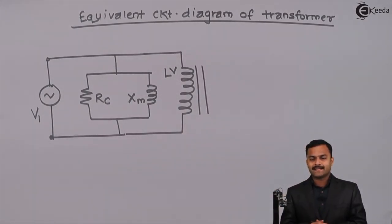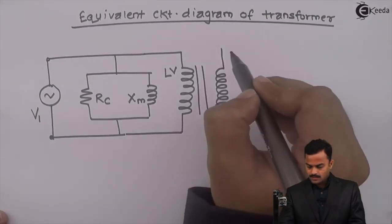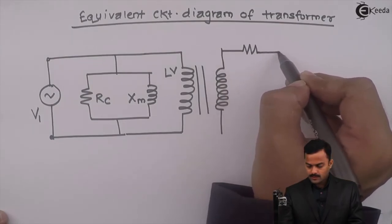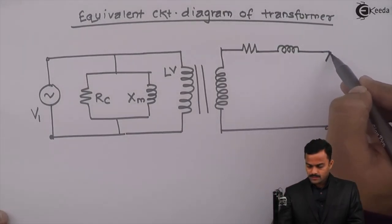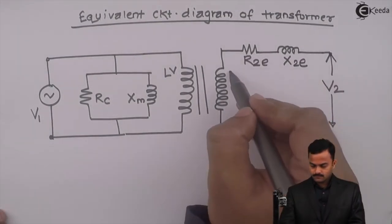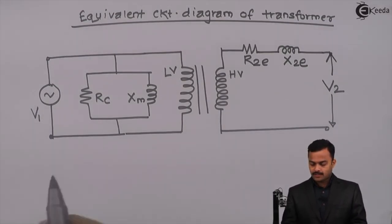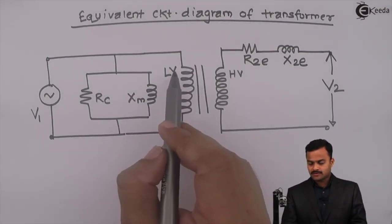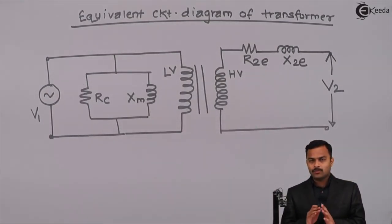The short circuit test is performed on the high voltage side, which is the secondary. The parameters obtained are R2E and X2E, and the secondary side voltage is V2. This is the equivalent circuit diagram of a transformer obtained from OC and SC tests.